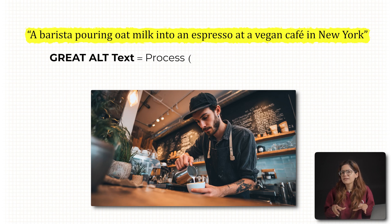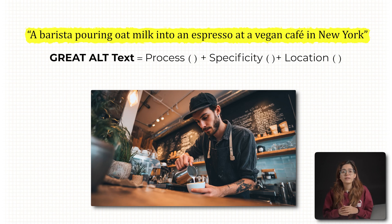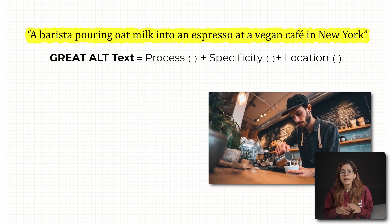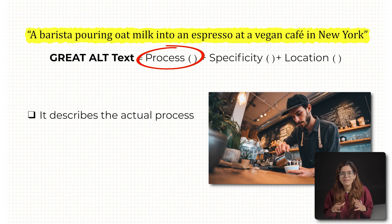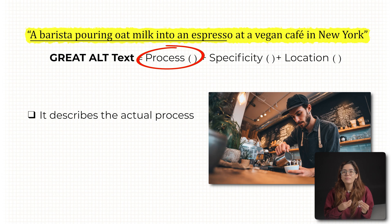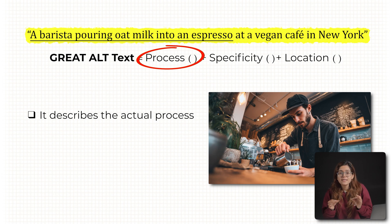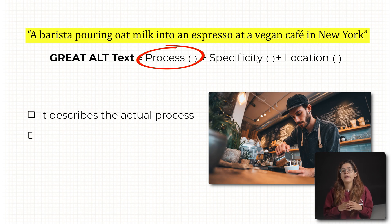Now why is this great alt text? Three reasons. First, it describes the actual process — not just 'coffee', it says what's happening: 'a barista pouring oat milk into an espresso'. That gives AI context. This isn't just a stock photo; it's an image with a purpose.